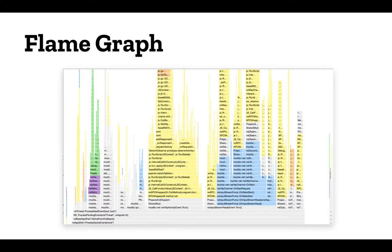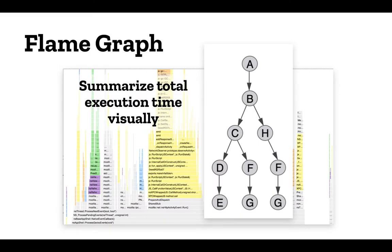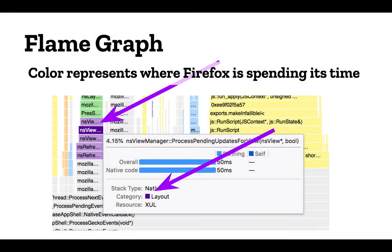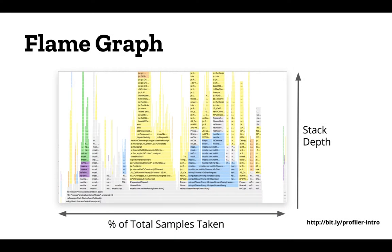The flame graph is a visual version of the call tree where the horizontal axis represents the percentage of time that it executed and the vertical axis represents the depth of the stack. It summarizes the total execution time visually. The percentage of total samples taken is horizontal and stack depth goes up. One thing not to get confused about: the area of the graph doesn't represent work done — just the horizontal extent. So something with a lot of stack depth can seem to be taking more time when in reality something else is actually creating the work.